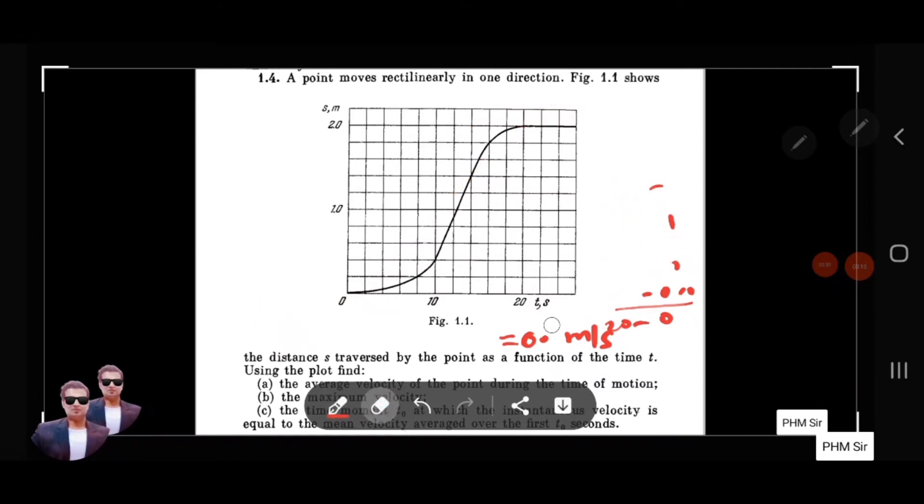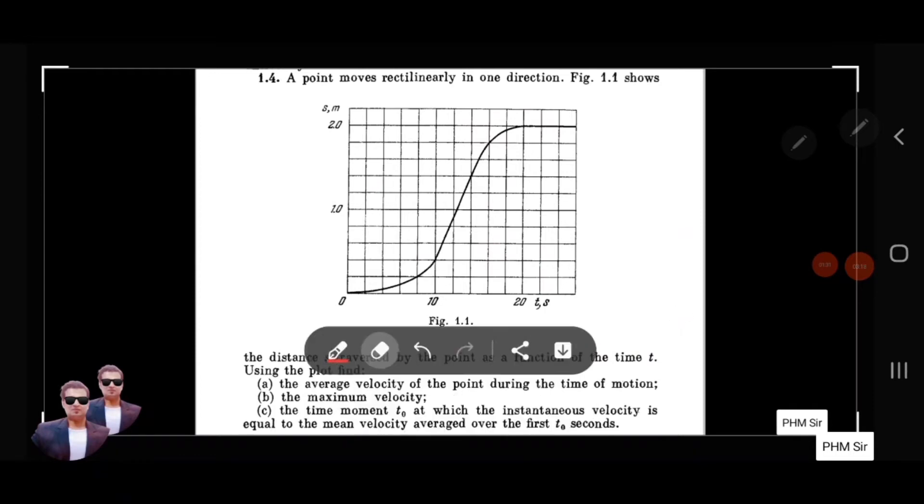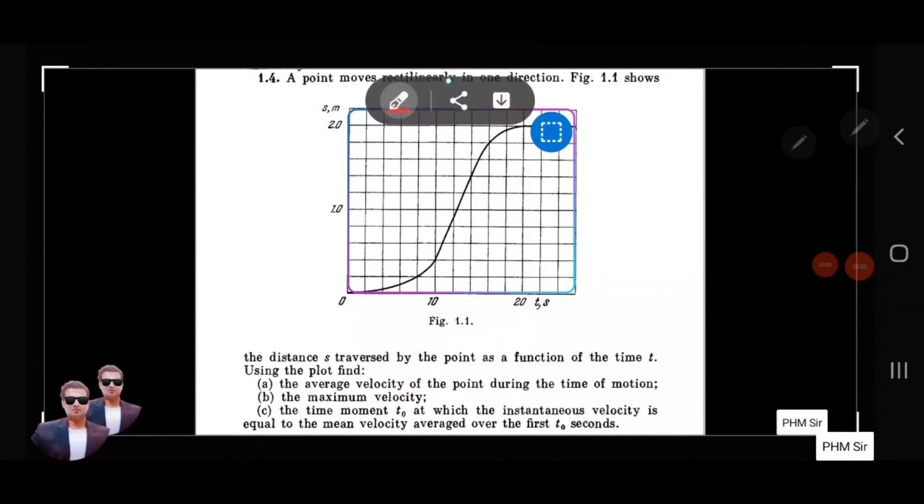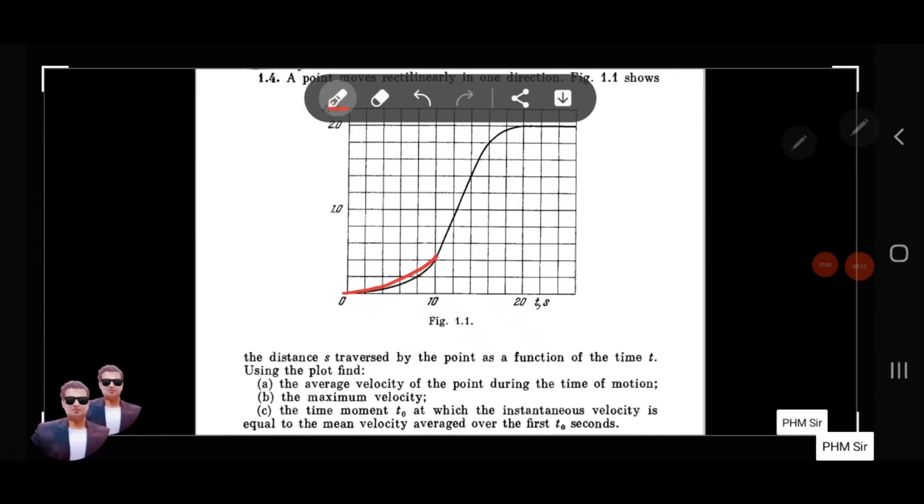This is the average velocity. Now for the second part: how do you find the maximum velocity? It is very easy. When we go from 0 to 10 seconds, the slope is growing. If you go from 10 to 16 seconds, you can see that slope is growing and reaches maximum.